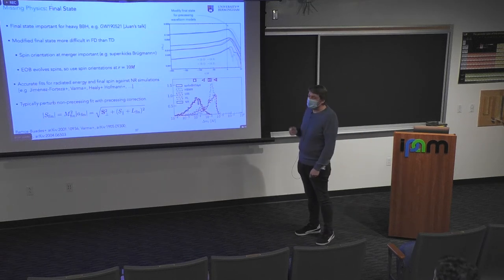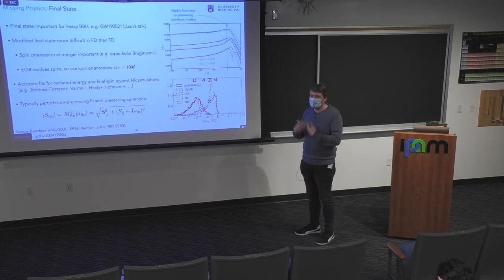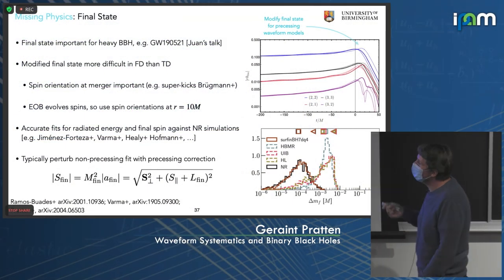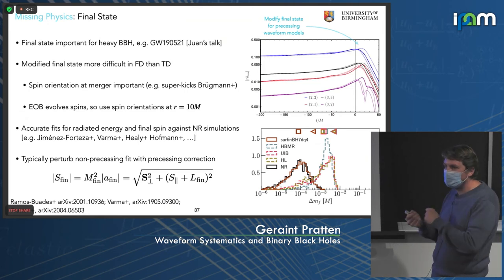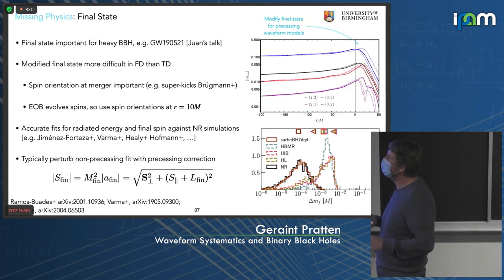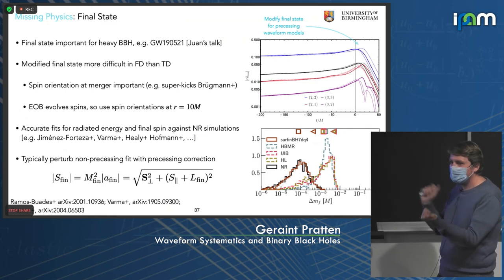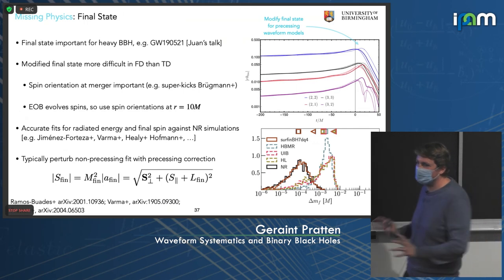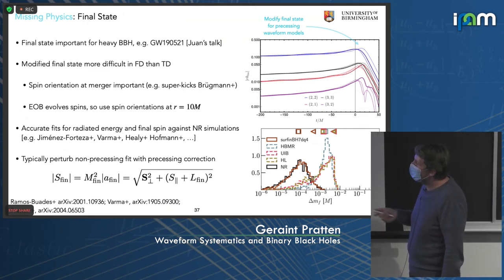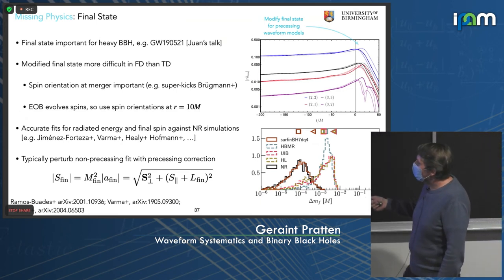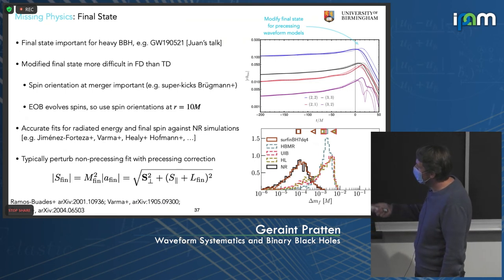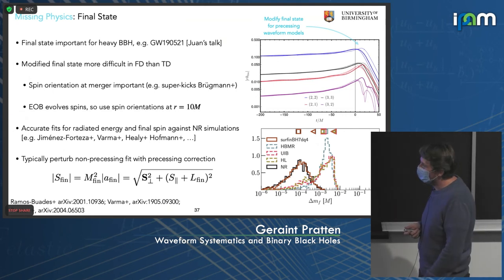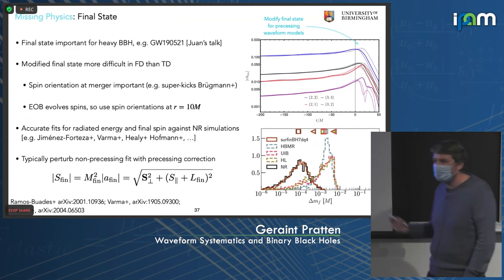The final mass and spin between the non-precessing and precessing approximants are not the same, so we need to modify aligned-spin waveform models with some correction to capture the final remnant. Post-Newtonian theory breaks down for the precession angles, so you want to calibrate against NR — but there's a depletion of NR simulations especially above Q=4. Work by Eleanor Hamilton shows dephasing in the precession angles with respect to NR data. This is something we know is a deficiency in current models and we're actively working to improve. The final state is also important, especially for GW190521, requiring accurate models for quasi-normal mode structure in the context of higher modes and precession.